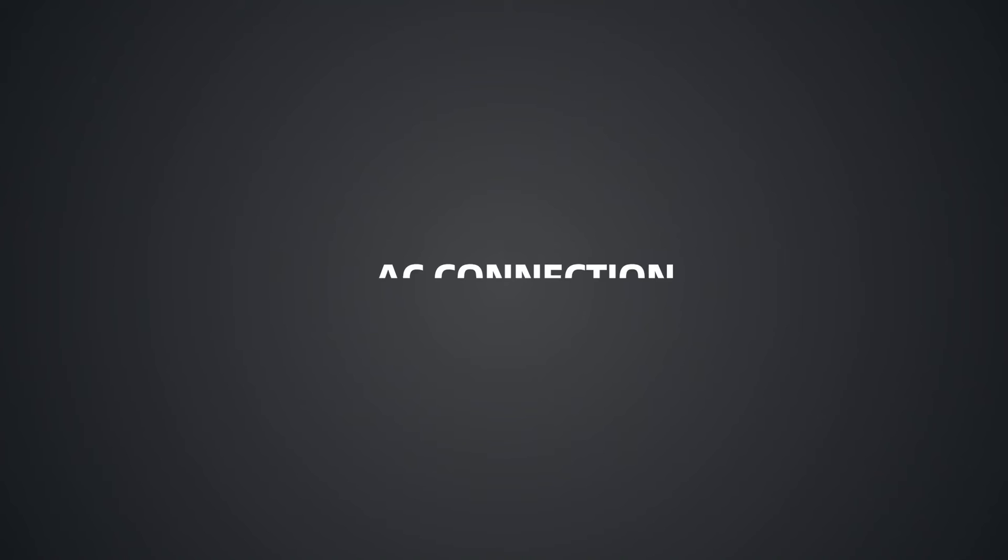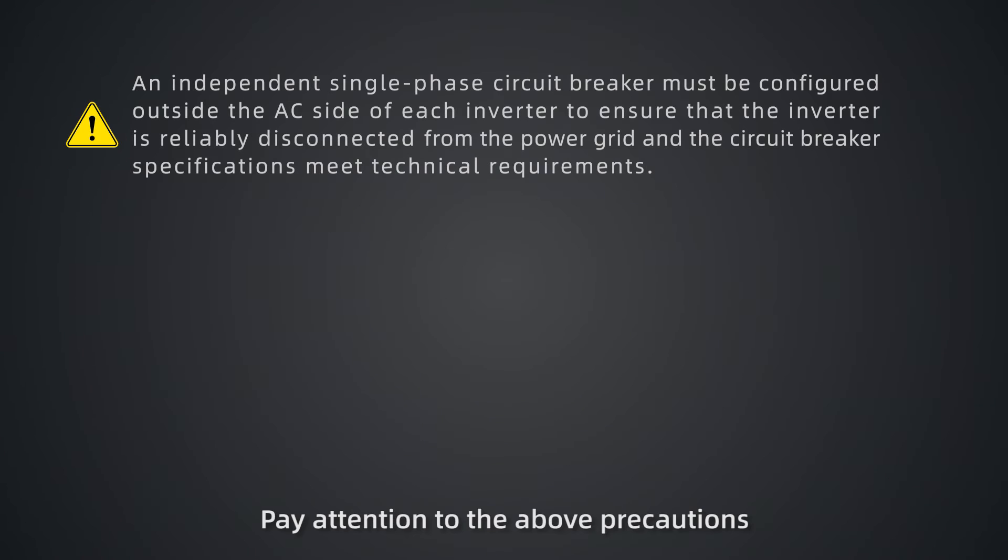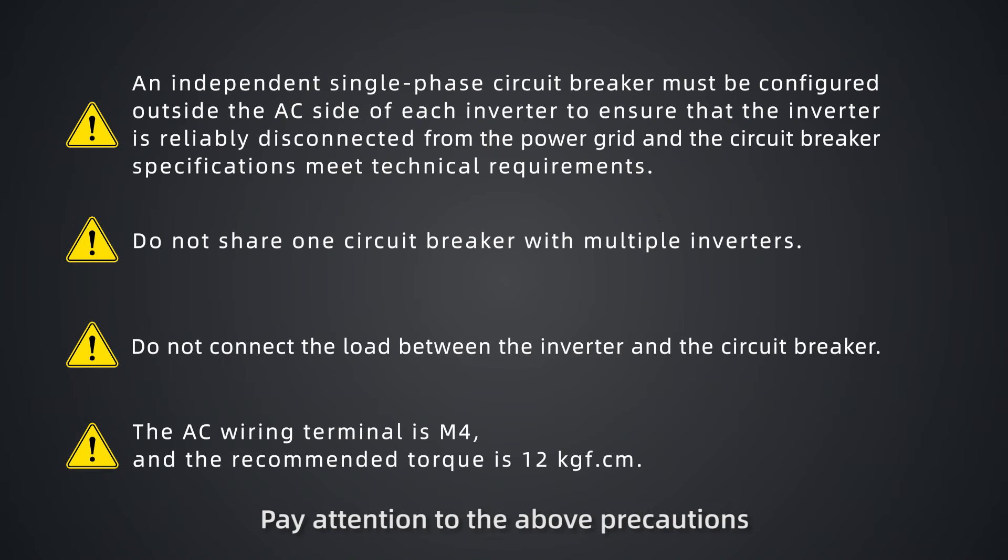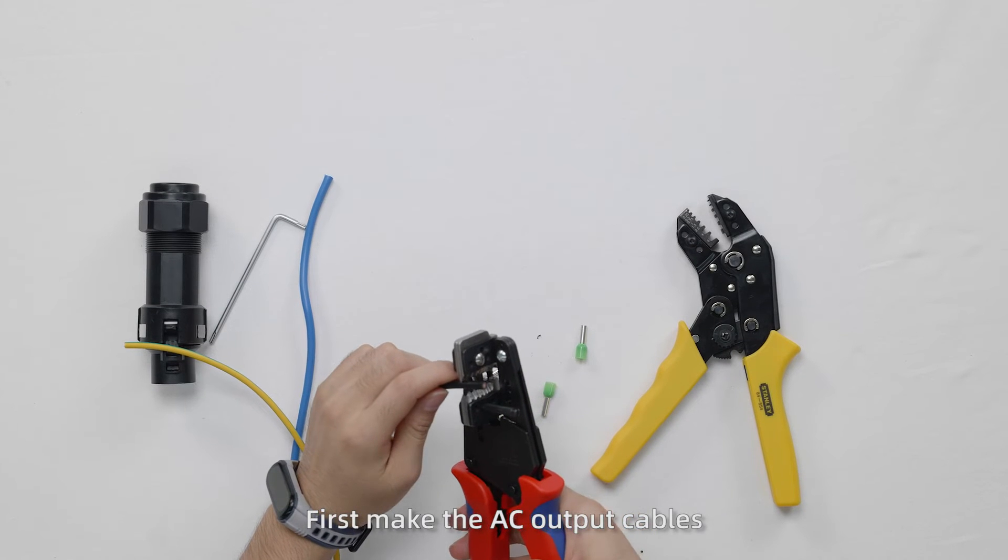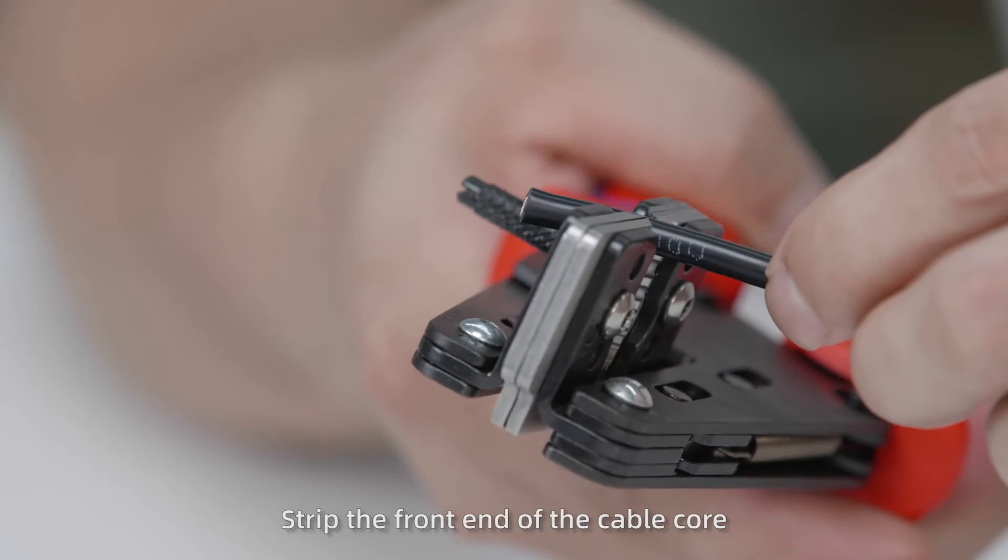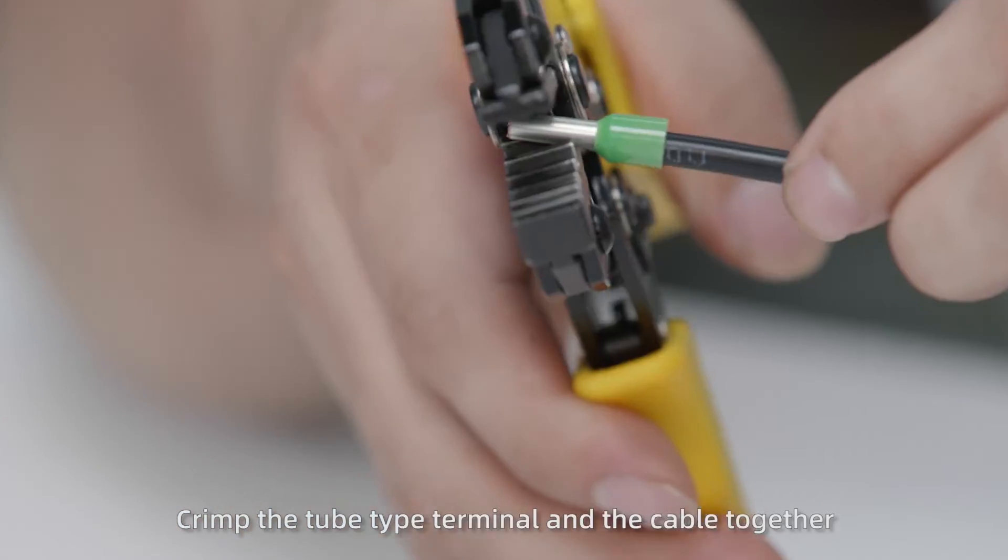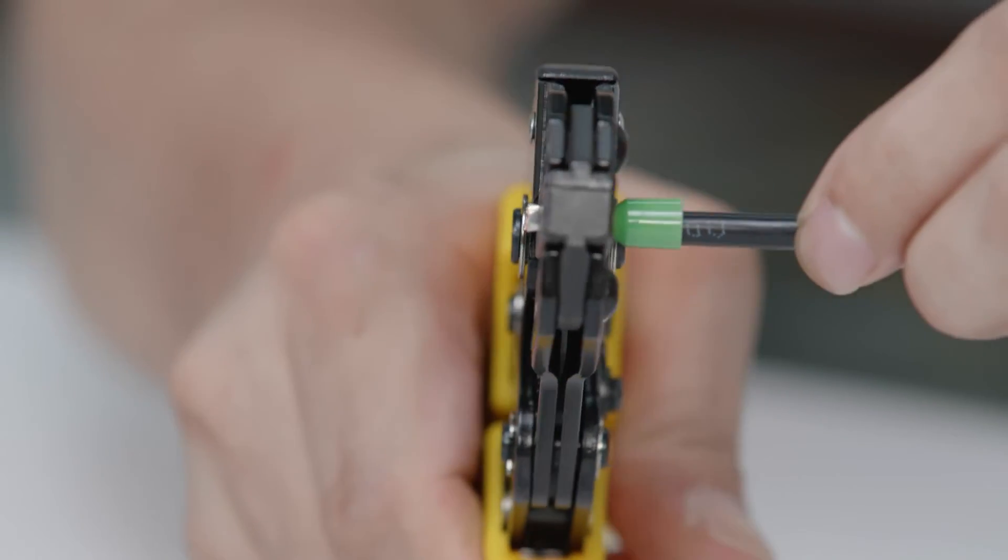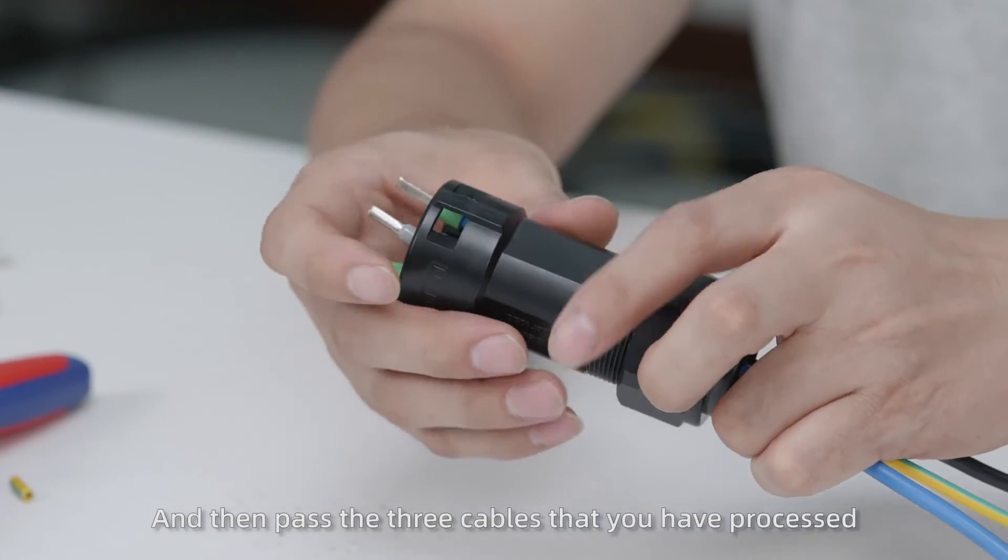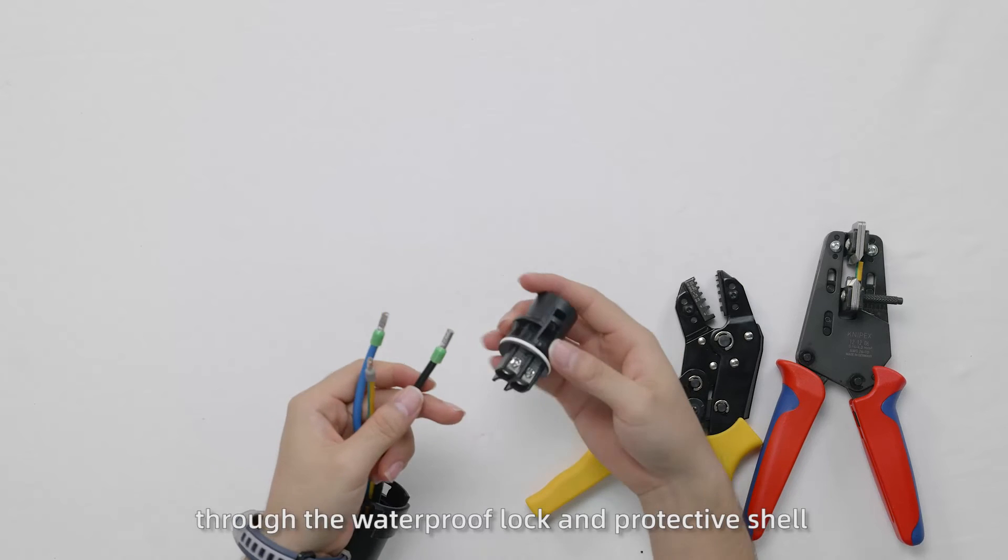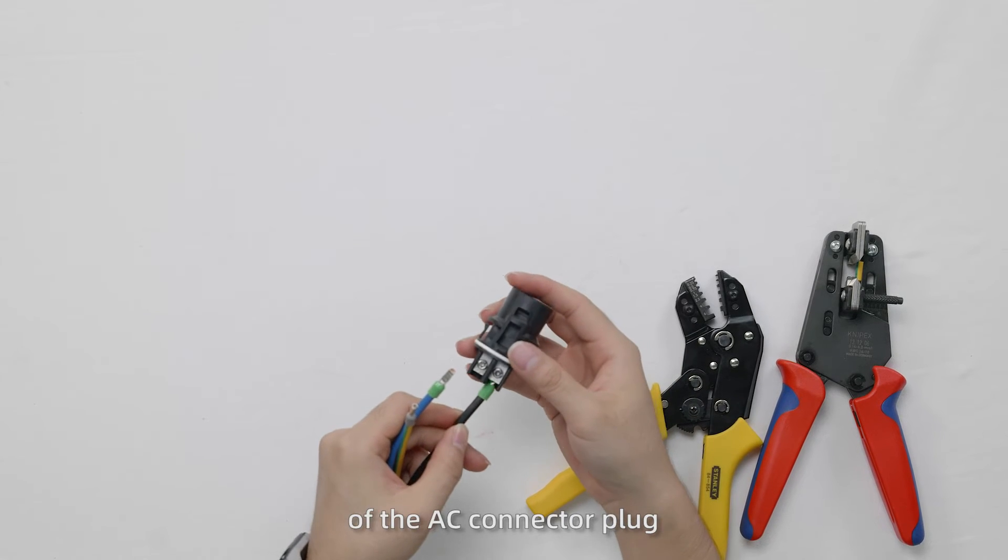Then, connect cables on the AC side. Pay attention to the precautions before cable connection on the AC side. First make the AC output cables. Strip the front end of the cable core, crimp the tube type terminal and the cable together. Then pass the three cables through the waterproof lock and protective shell of the AC connector plug.